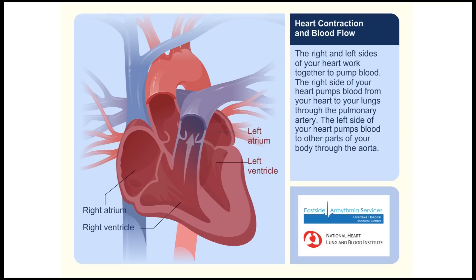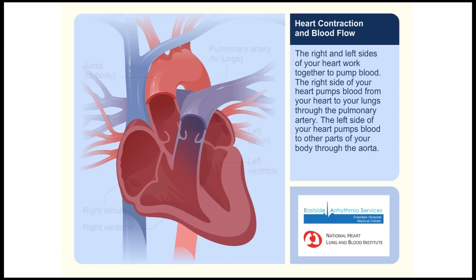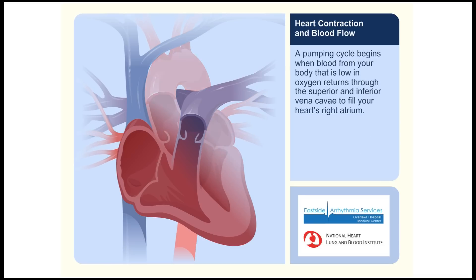The right and left sides of your heart work together to pump blood. The right side of your heart pumps blood from your heart to your lungs through the pulmonary artery. The left side of your heart pumps blood to other parts of your body through the aorta.